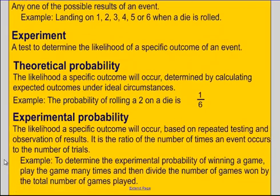Lastly, we have experimental probability. This is when we actually do the experiment. It's the likelihood of a specific outcome occurring based on the repeated testing and observation of results. An example of this is winning a game. Play the game as many times as you want, and then divide the number of games you've won by the total number of games you've played. That's the experiment, and we're going to be doing one of these a little later on.